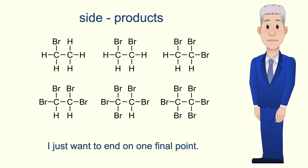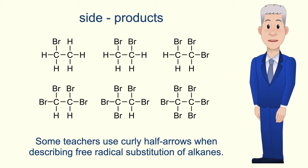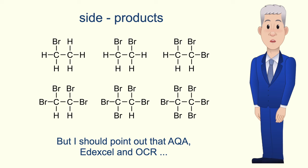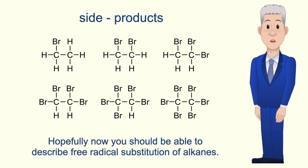I just want to end on one final point. Some teachers use curly half arrows when describing free radical substitution of alkanes, but I should point out that AQA, Edexcel, and OCR do not require students to use curly half arrows. Hopefully now you should be able to describe free radical substitution of alkanes.